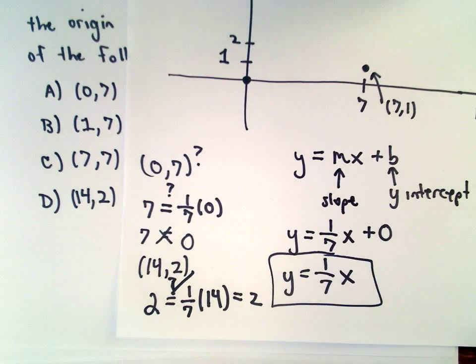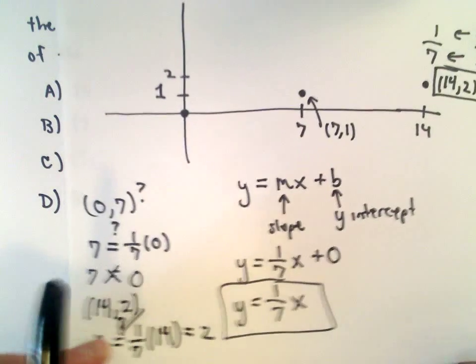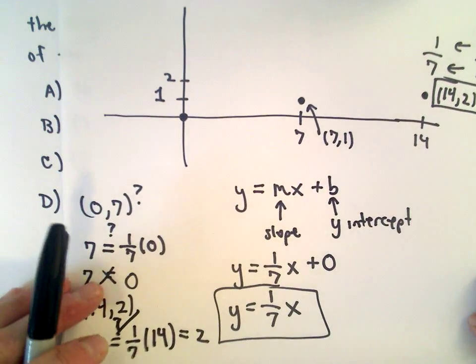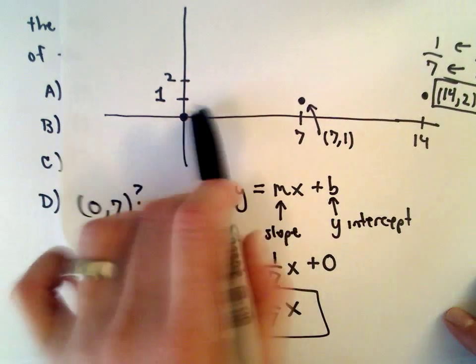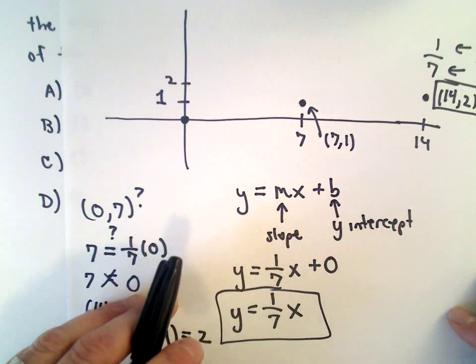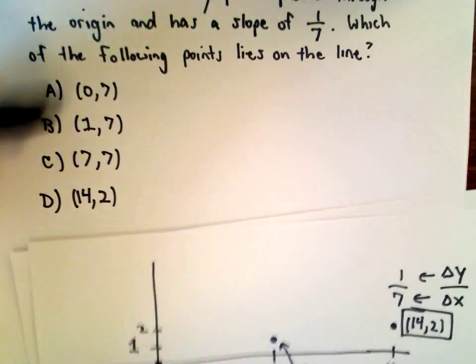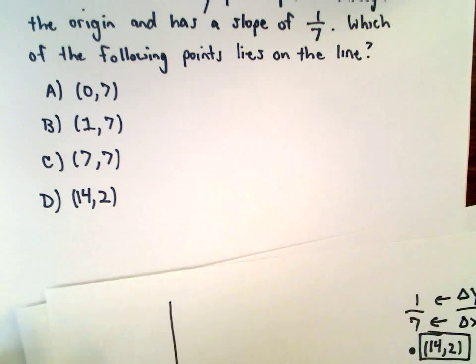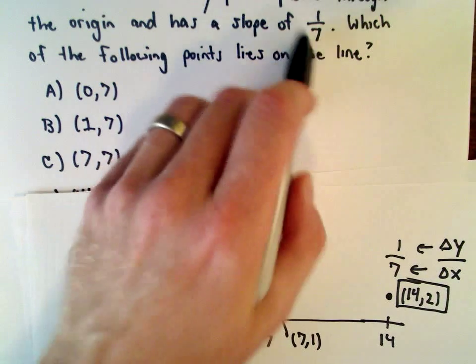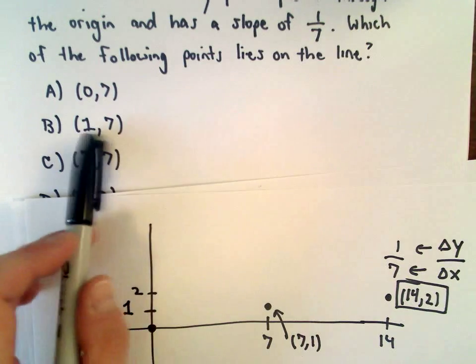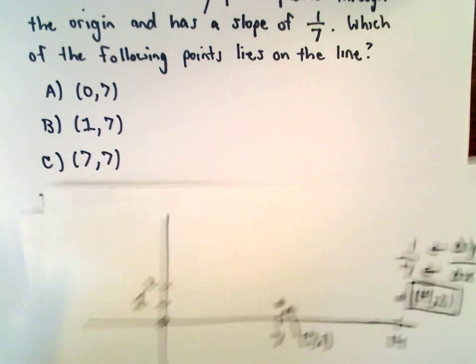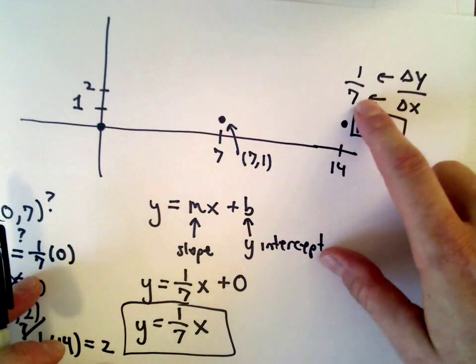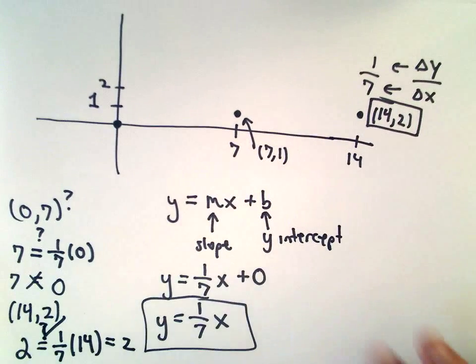That would be another way to do it - a more algebraic way without graphing. So two ways to do it. Whichever way makes you happy. If you peeked over at me on the test, I would definitely just be doing a rough sketch because the numbers are pretty small and I could do that quickly. But notice they're trying to trip you up - they're giving you a slope of 1/7 and (1,7) as a solution. Make sure you're doing your change in y over your change in x correctly when you graph it.